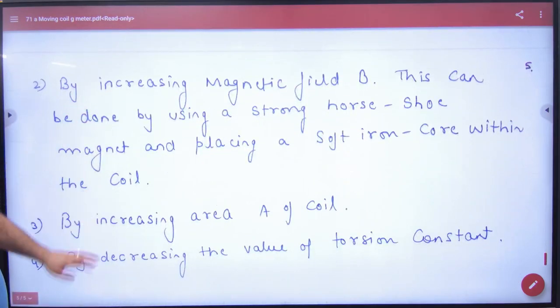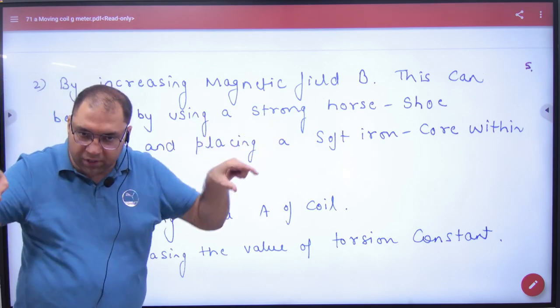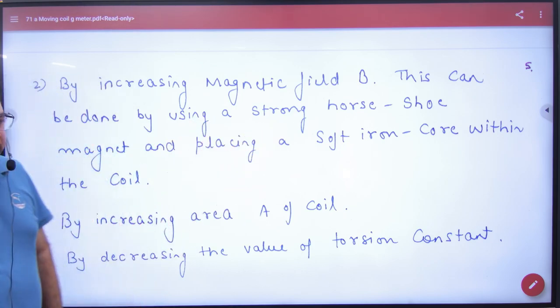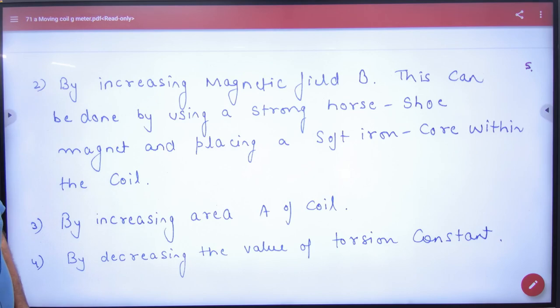Next. By increasing magnetic field B. How do you increase the magnetic field? How can we increase B? By using horseshoe magnet. North-South horseshoe magnet use ki jai. And, by placing soft iron core within the coil.